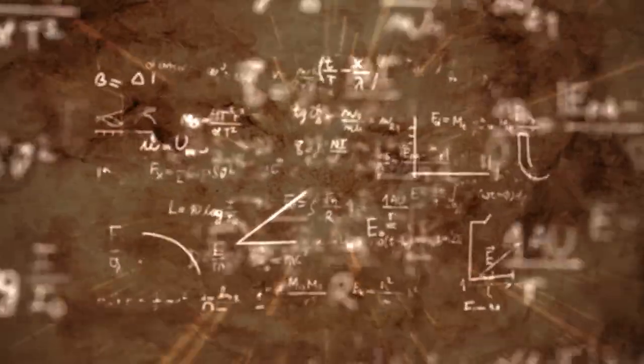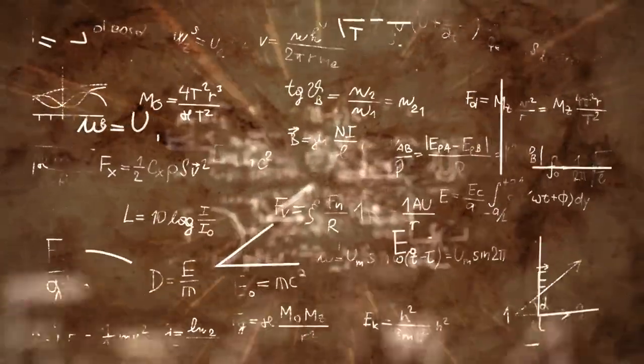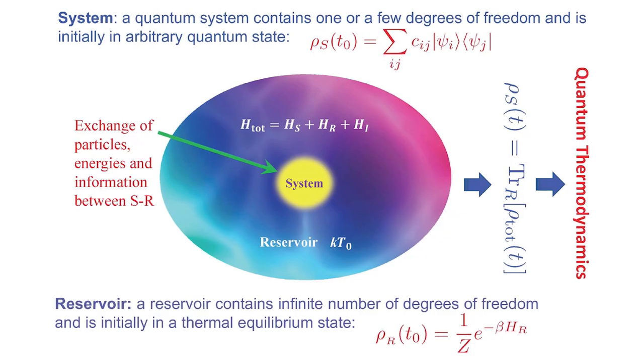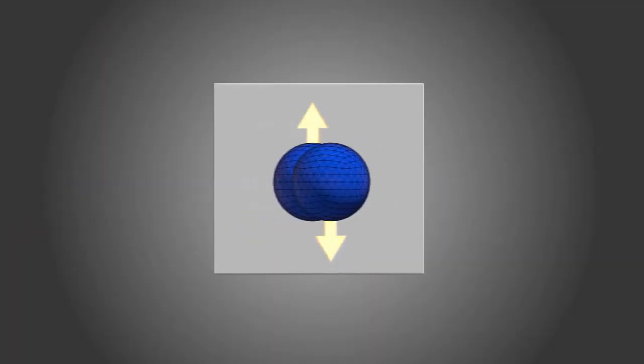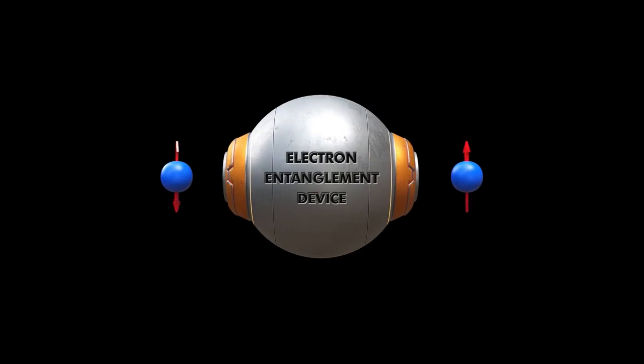This implies that they have mathematical relationships when we measure their final results. The characteristic correlations between components of a quantum system that differ from the correlations we often observe in the classical world are known as quantum entanglement.